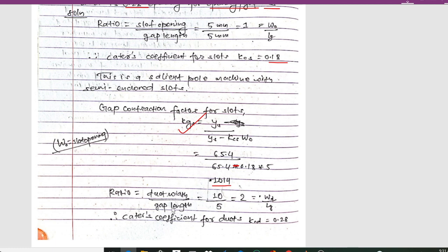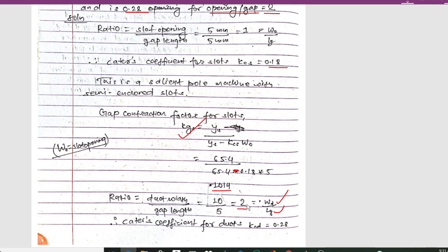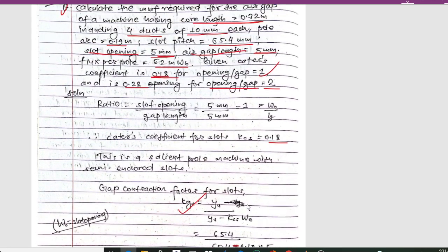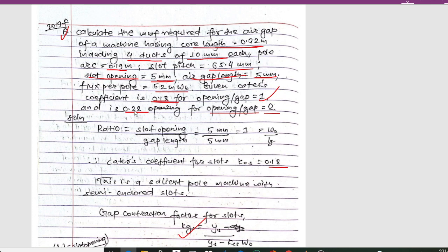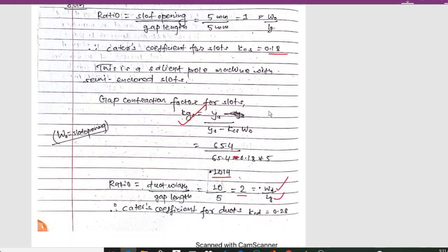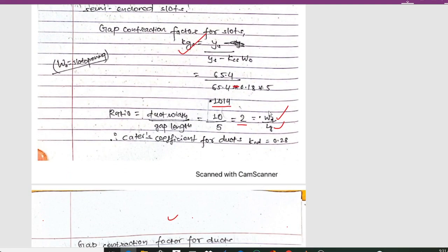For the duct, the ratio = duct width / gap length = 10 mm / 5 mm = 2. For ratio = 2, the Carter's coefficient is 0.28, so the Carter's coefficient for the duct, Kcd = 0.28.